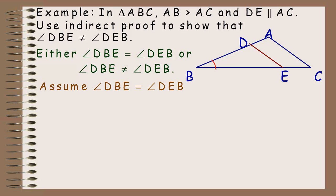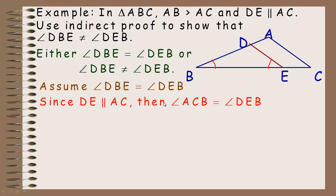We assume that angle DBE and angle DEB are the same. Because DE is parallel to AC, angle ACB must equal angle DEB — corresponding angles formed by the parallel lines. So we can mark those angles equal. This means angle DBE and angle ACB also have to be equal, because both are equal to angle DEB.